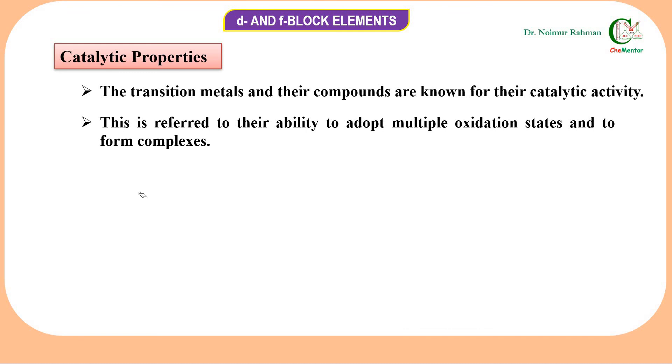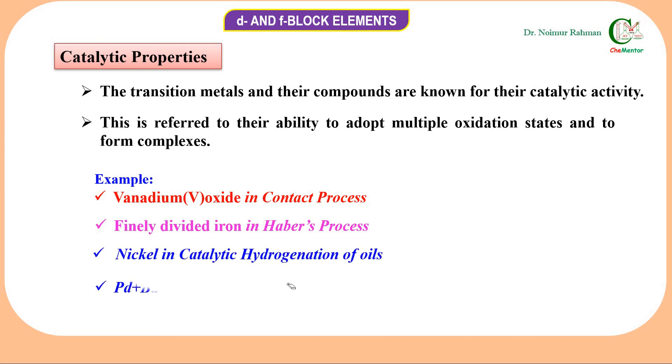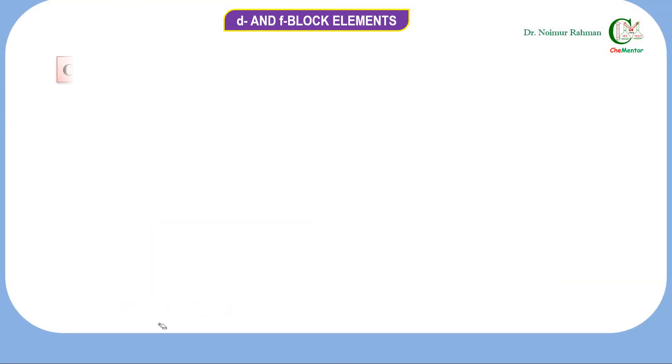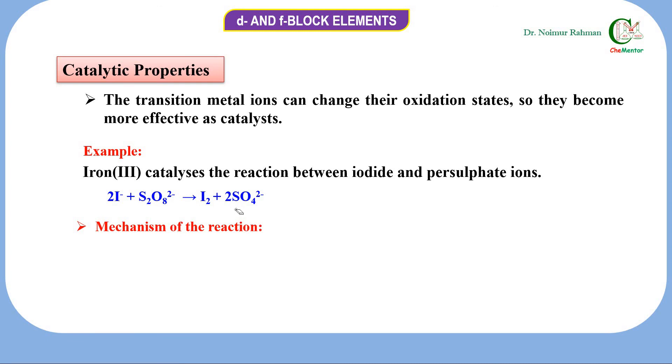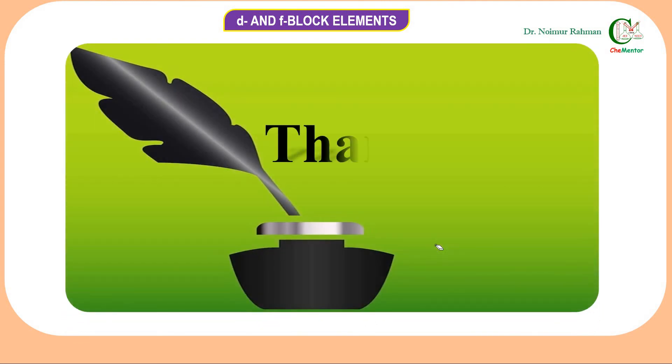The transition metals and their compounds are known for their catalytic ability due to their ability to adopt multiple oxidation states and to form complexes. For example, vanadium pentoxide is used as a catalyst in contact process, finely divided iron is used in Haber's process, nickel is used in catalytic hydrogenation of oils, and palladium plus barium sulfate, called Lindlar's catalyst, is a reducing agent in the hydrogenation of alkenes and alkynes. Iron(III) catalyzes the reaction between iodide and persulfate ions.